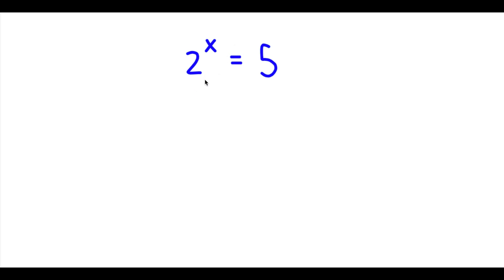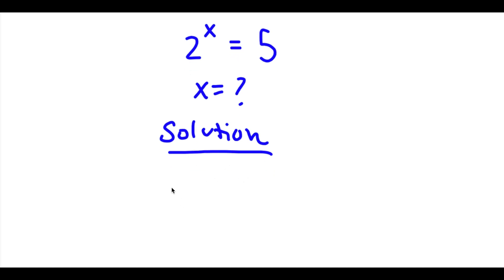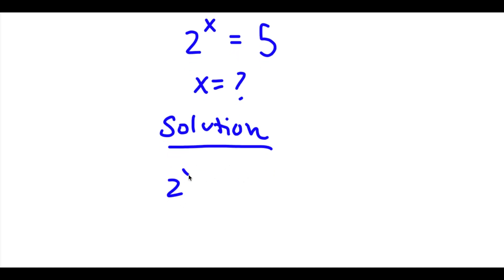Alright, so I have 2 to the power of x is equal to 5, and now I want to find the value of x. So for my solution, I first start with 2 to the power of x is equal to 5.